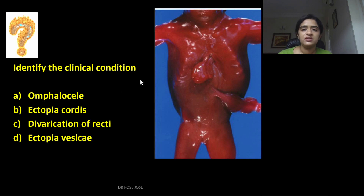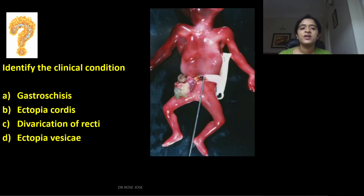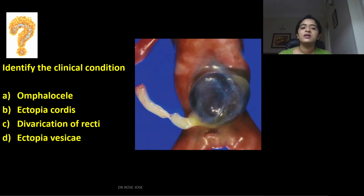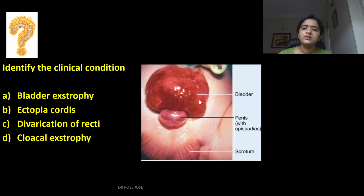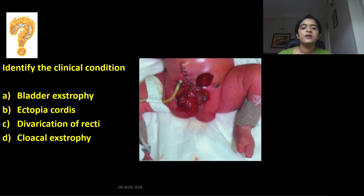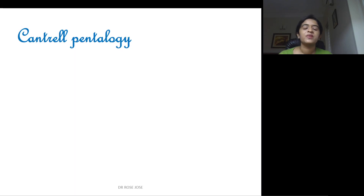Identify this condition: this is the thoracic region and you can see the heart lying outside — this is known as ectopia cordis. In the abdominal region, you can see the coils but they are not covered by amnion — that is gastroschisis. If the coils are outside but covered by amnion, that is omphalocele. If the bladder is lying outside, that condition is bladder exstrophy. If the cloacal region is lying outside, that is cloacal exstrophy.